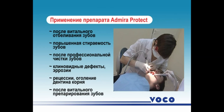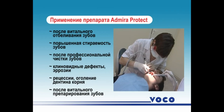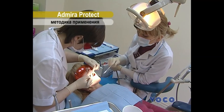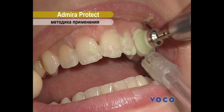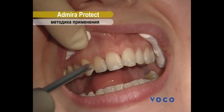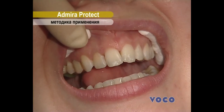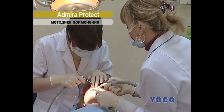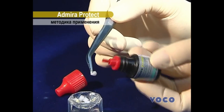Procedure for working with the drug: clean the surface of the tooth, isolate the tooth, dry the surface well. When applying to dentine, leave the surface lightly moistened. Apply the drug on a microbrush or brush, and spread the first layer of the drug evenly on the surface of the tooth. Exposure time: 20 seconds.